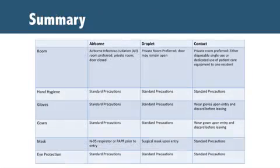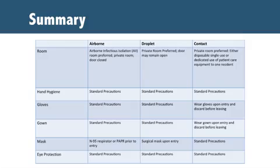In this module, you have learned that there are some infections and diseases that cannot be managed with standard precautions alone. In those instances, additional precautions called isolation or transmission-based precautions are required. The chart shown here summarizes requirements for the three transmission-based precautions for airborne, droplet, and contact spread diseases and infections. Take a moment to review the chart.